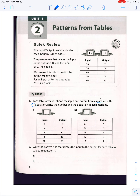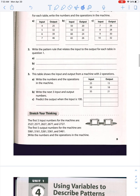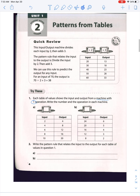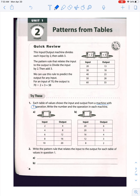Okay, first of all we are going over the homework from yesterday, so please have out a pen. We are on pages 4 and 5. For each table of values, show the input of a machine with one operation, then write the numbers and the operation in the machine.